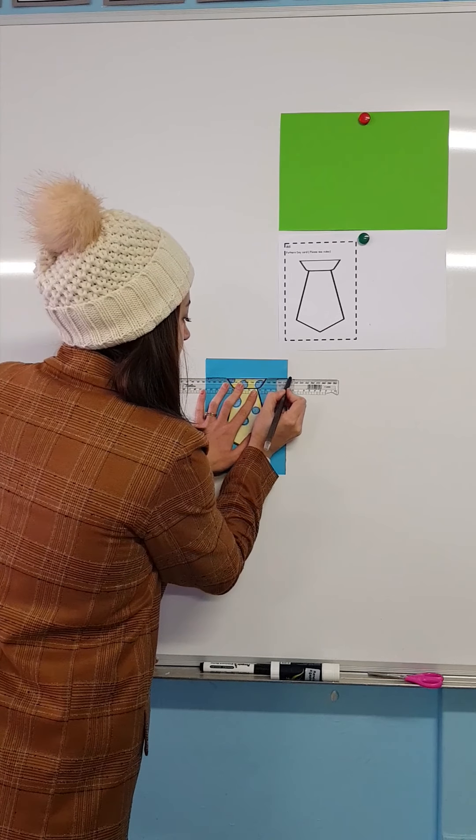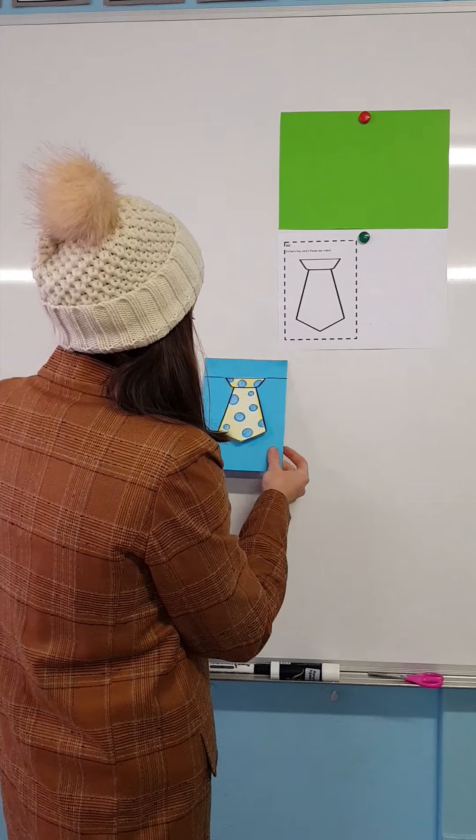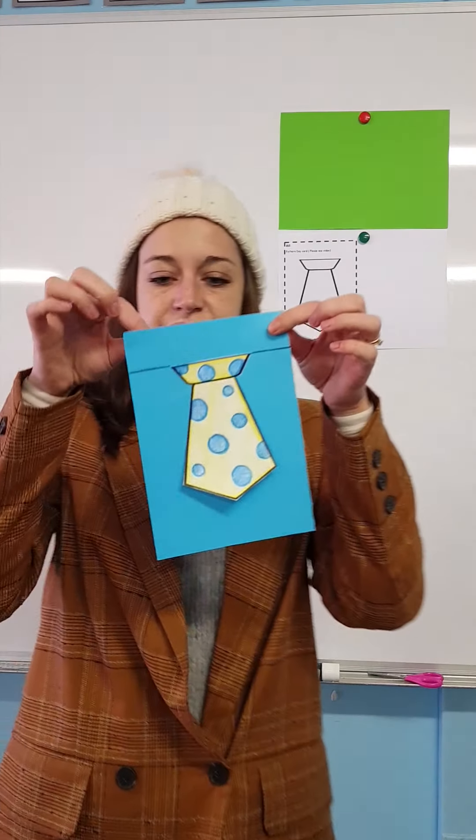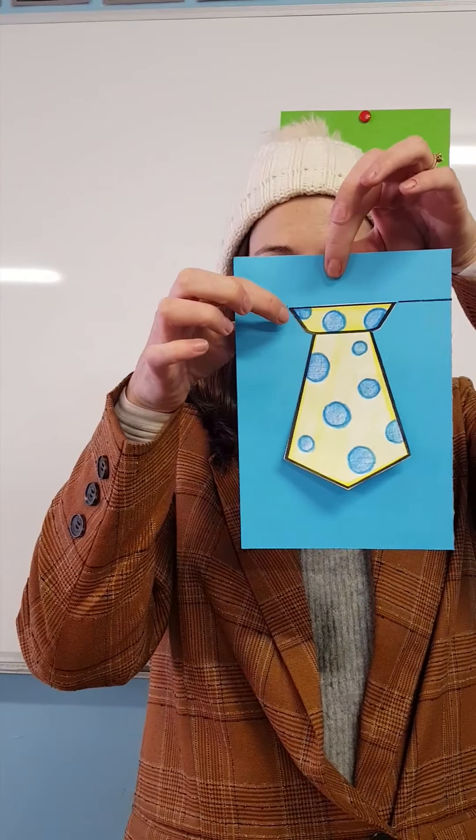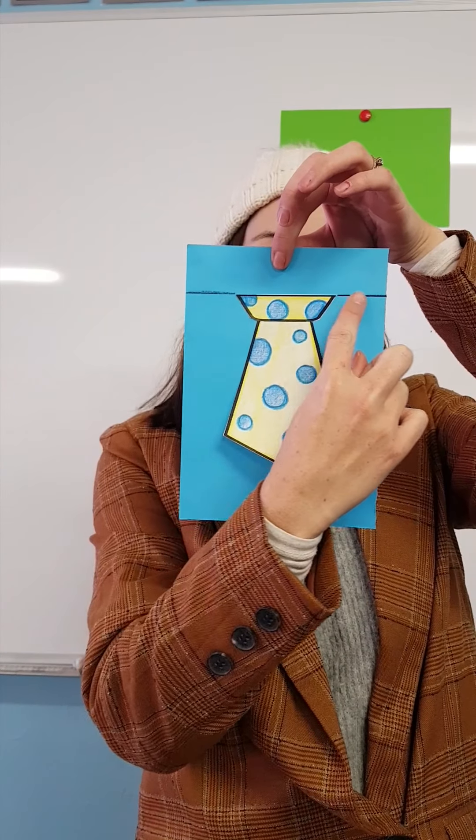I'll bring the picture a bit closer so you can see. So from the one corner of my tie, I made a line to the side, and the other corner of my tie to the side.